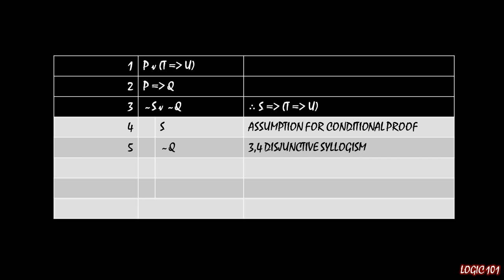And if we have that not Q is true, what else do we see? Well, using lines two and also line five, we can use modus tollens to back out that not P is true. And if we have not P is true, then well, you know what, we can use disjunctive syllogism again. On lines one and six, we have P as being part of a disjunction with T implies U, but we know from line six that not P is true. So that means that the second part of line one must be true, which means we get the implication T implies U.